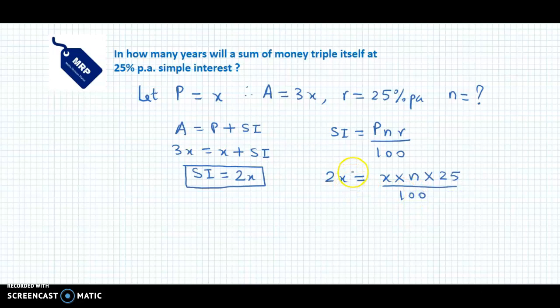We could cancel x on both sides and reduce this further. 25 divided by 100 is 1/4, and 4 × 2 = 8. Therefore, the time period is 8 years.